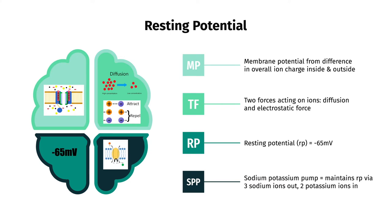The difference in overall charge of the ions in the cytoplasm and the extracellular environment sets up a membrane potential. There are two forces acting on the ions: the diffusion or chemical force, where ions move from high to low concentrations, and the electrostatic force, where positive ions repel and oppositely charged ions attract. The resting potential of the inside versus the outside of the cell is about negative 65 millivolts in neurons. The sodium-potassium pump, which actively pumps three sodium ions out and two potassium ions in, helps maintain the resting potential.